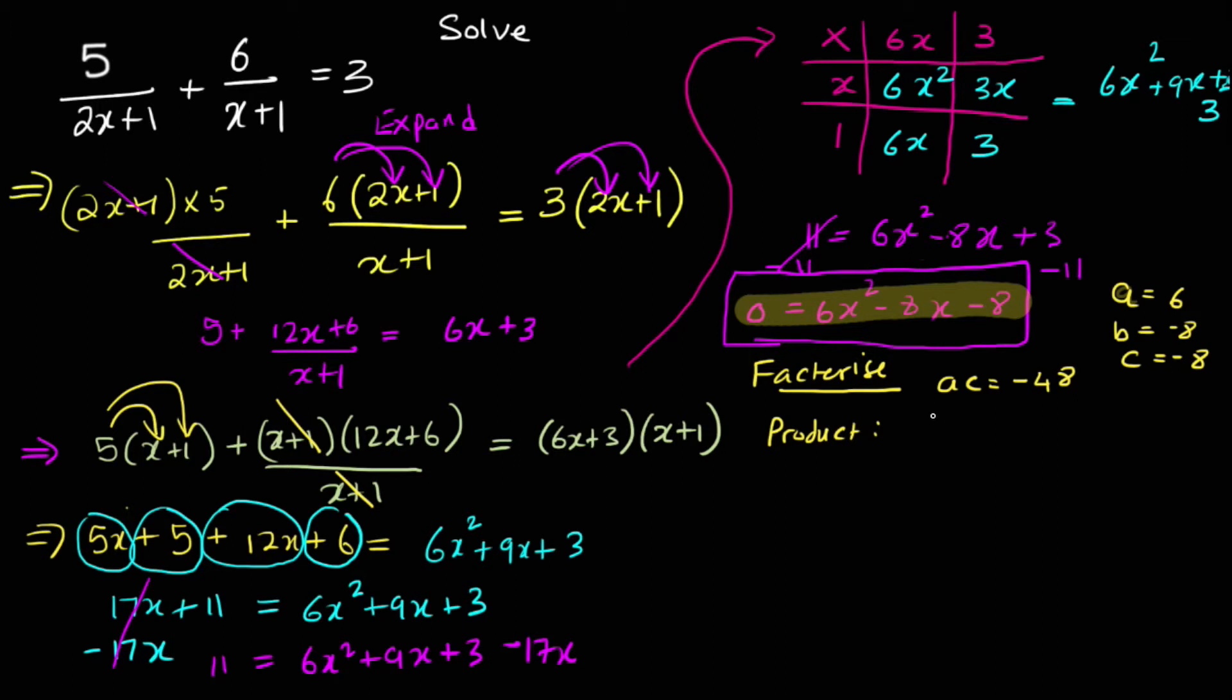4 and 12. 12 and 4? But 12 and 4 is not minus 48. Minus 12. Does that give you minus 48? It does. And does the same two numbers when you add it up, does that give you minus 8? It does. So actually we found our two values, haven't we? So then what do we do? Put that into the equation. We rewrite the equation. Zero equals to 6x squared minus 12x plus 4x minus 8.